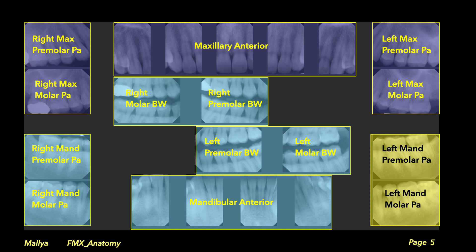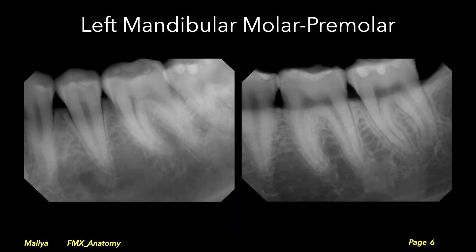We next move on to the mandible, starting with the left mandibular posterior region. These radiographs should show the mandibular premolars and molars. Note that the mesial aspect of the first premolar is not seen; however, the premolar bitewing does adequately demonstrate this region and no retake of this radiograph is required.